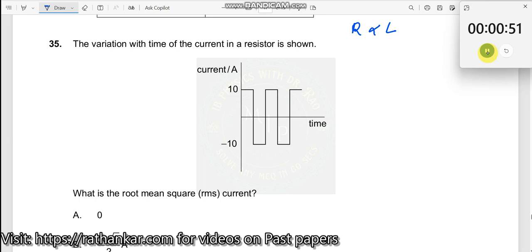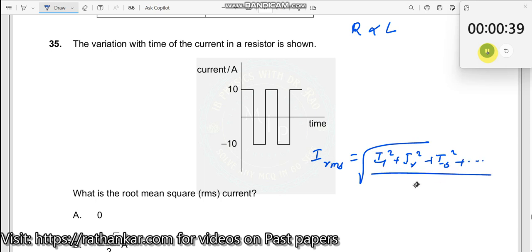Now, you need to go with the definition of RMS current. What is it? It tells you IRMS is equal to square root of I1 square plus I2 square plus I3 square, etc., divided by how many currents we have. Root mean square, that is what it is.